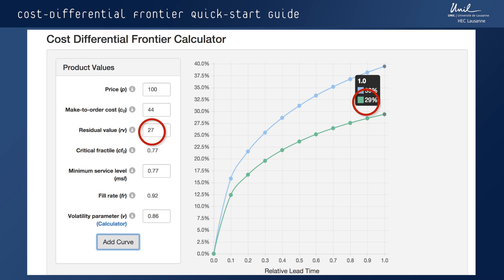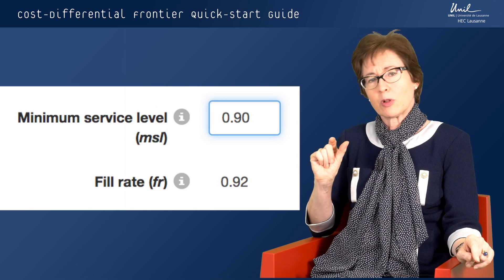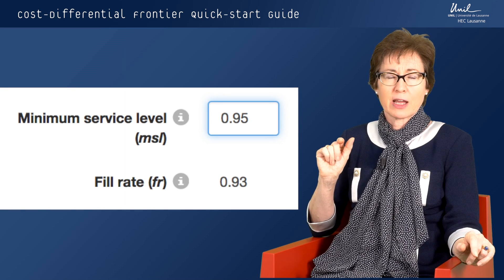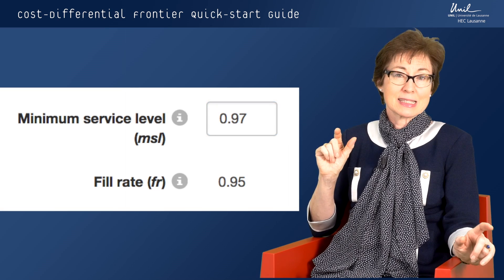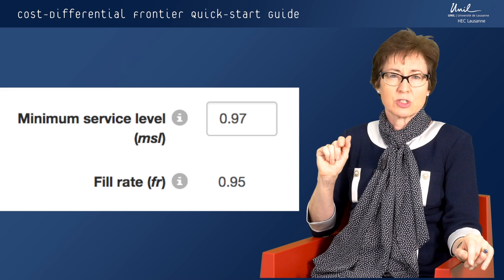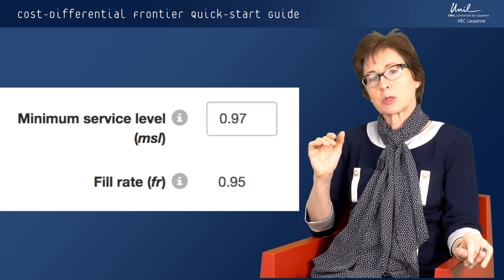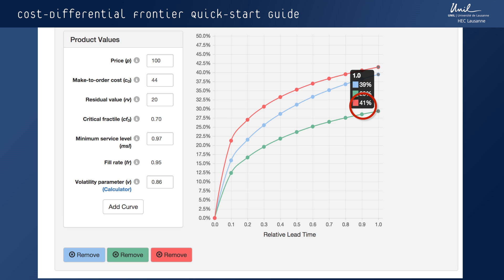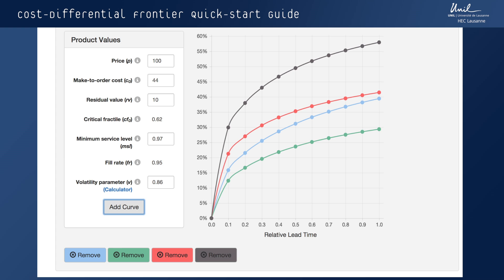Let's also ask: what happens if our marketing department says the minimum fill rate that can be considered without seriously unhappy customers would be 95%? We can explore what service level we have to input to achieve a minimum fill rate of 95% — we see that this requires a 97% service level, meaning a 97% chance that all demand will be satisfied, and this raises the required cost differential for the full lead time to 41%. Finally, if the actual average residual value were more like 10 instead of 20 or 27, that would push the required cost differential up to 57%.